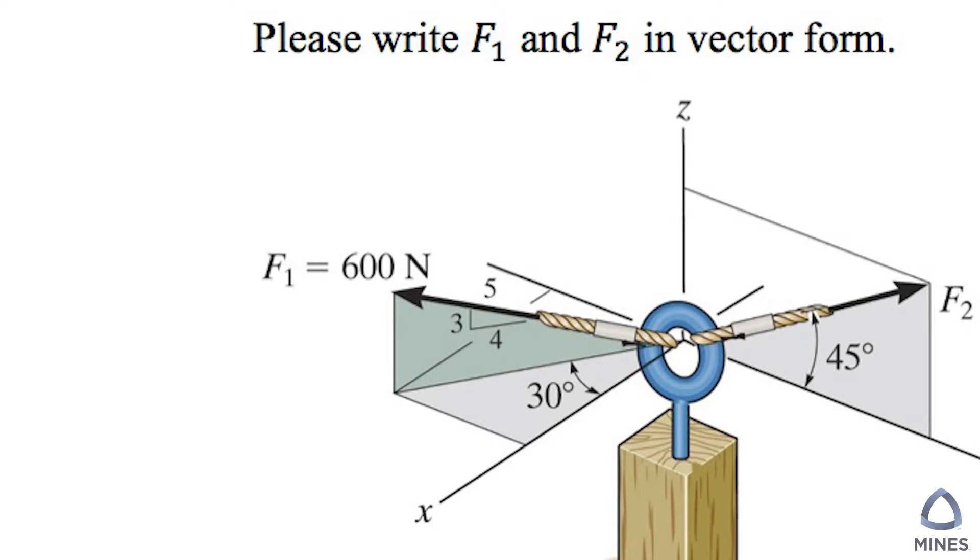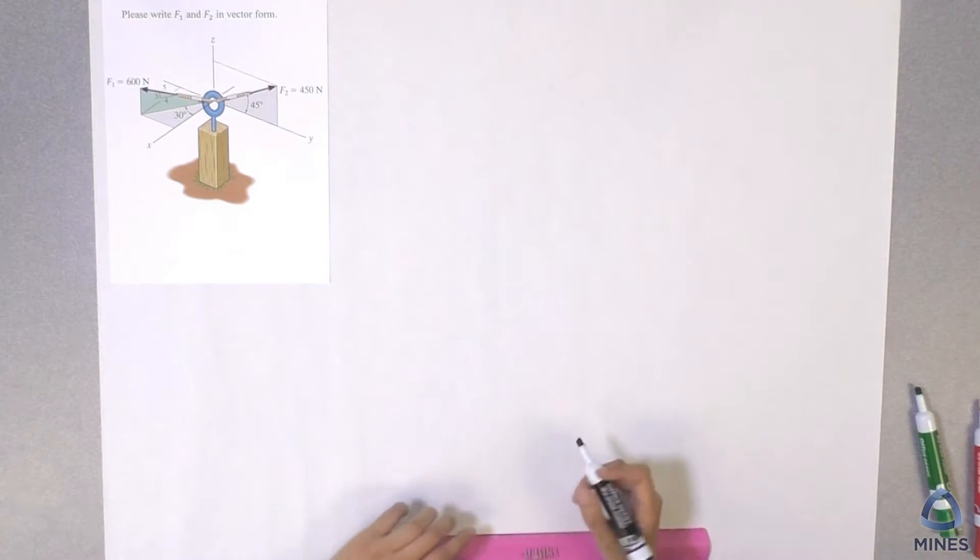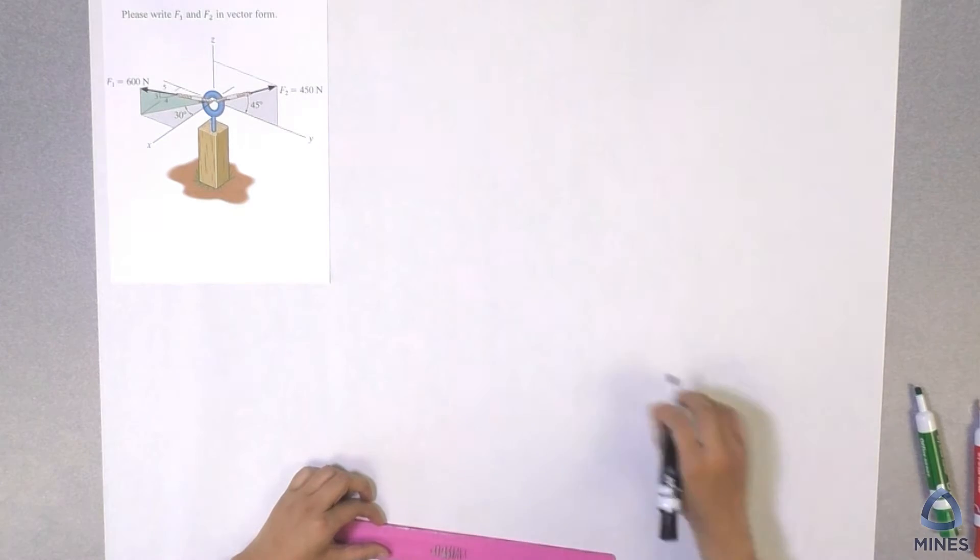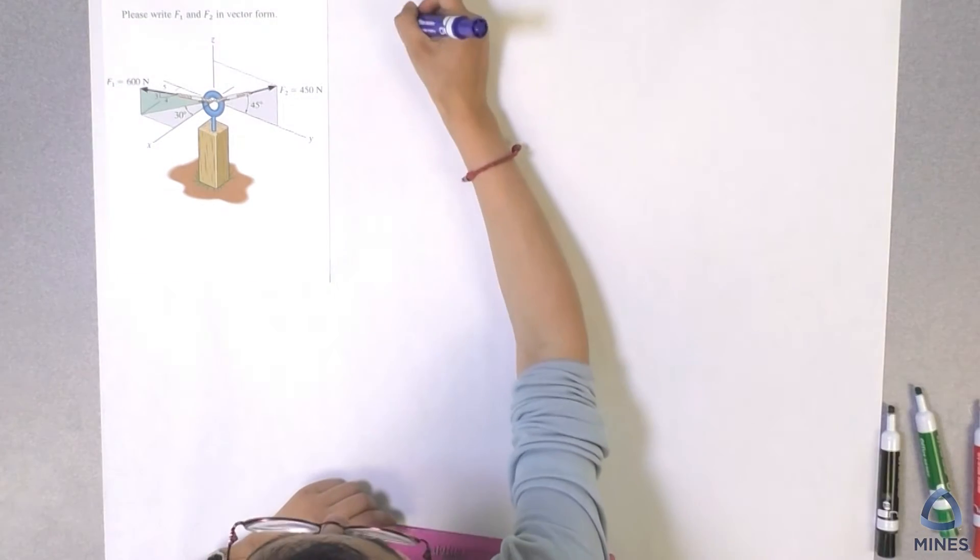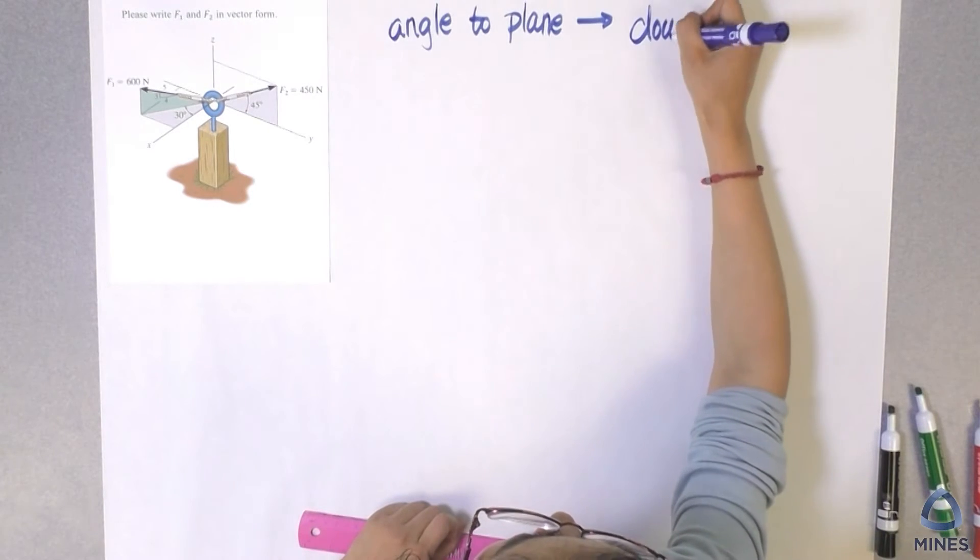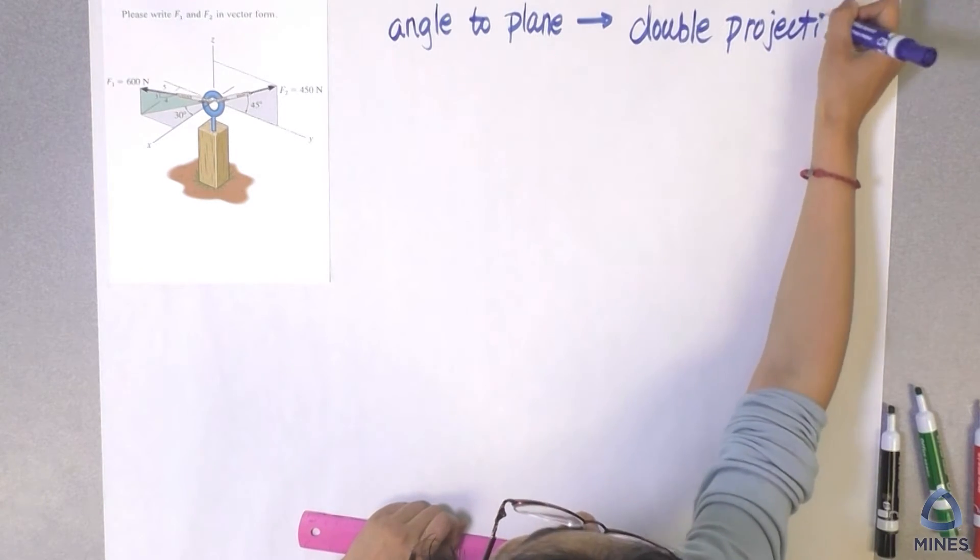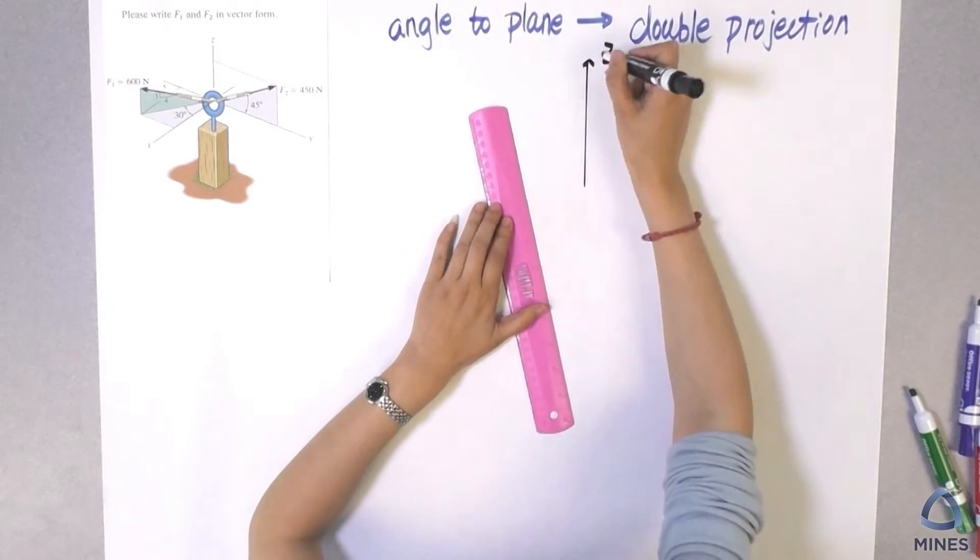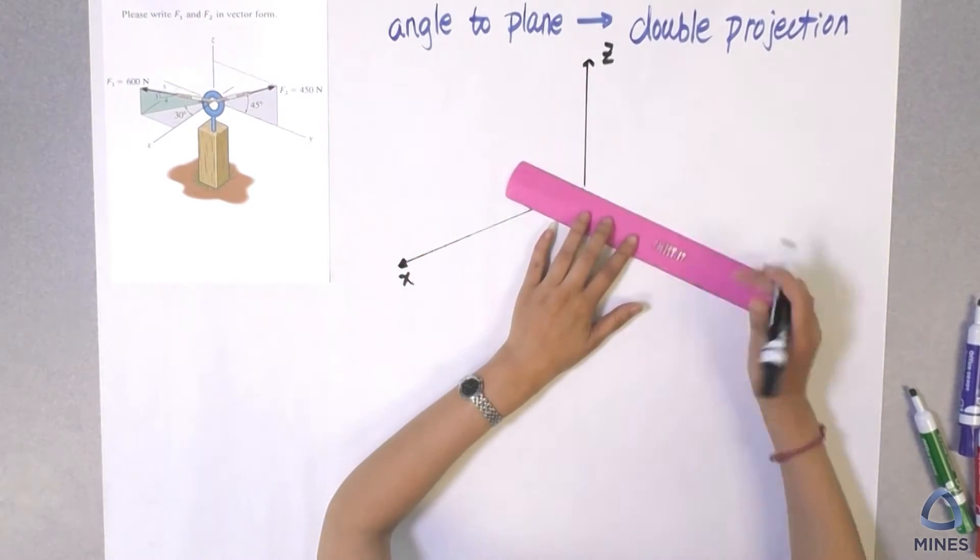You can see the angle 30 here is not directly to the axis, which means we only had some angle to the plane. So whenever we had angle to plane, means we are going to have a double projection. So what is a double projection means I will show you.